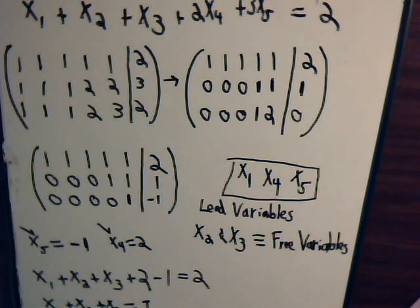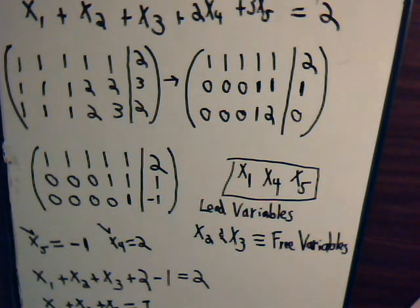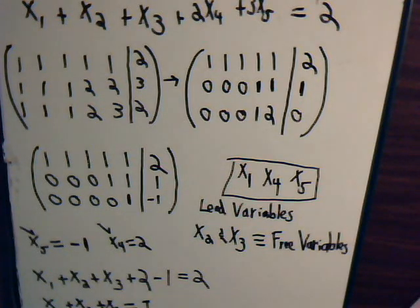Anyway, that's it for this video. You can see how underdetermined systems behave when we apply the Gaussian elimination or row echelon form technique — it's entirely different from overdetermined systems. Come back and join us for more videos where we'll solve more problems.